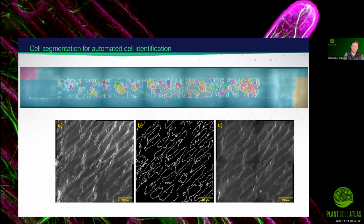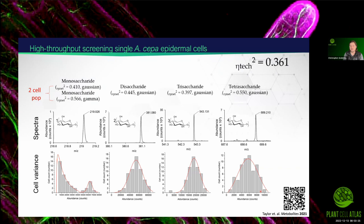Now we're in a place where we can do high-throughput screening. Using onion cells — which are fairly large — we can see the metabolic variation across different cells within the same tissue by measuring cell by cell. We have some idea, based on the technical noise of our instrument and setup, whether what we're observing is actual biological variation or instrumental noise. This was a demonstration that we could do cell-by-cell imaging.